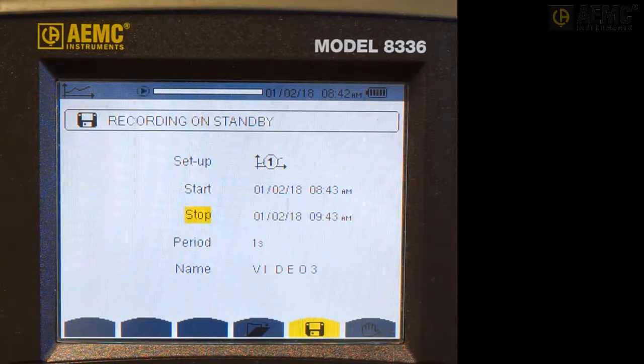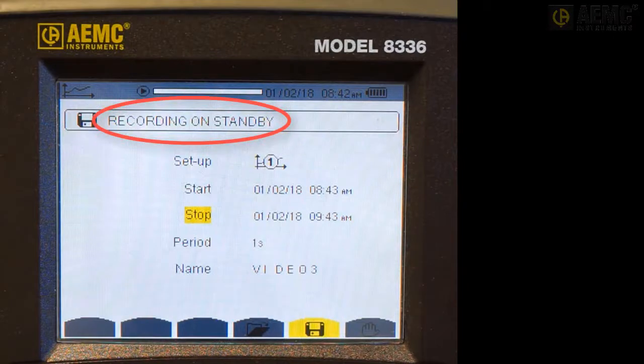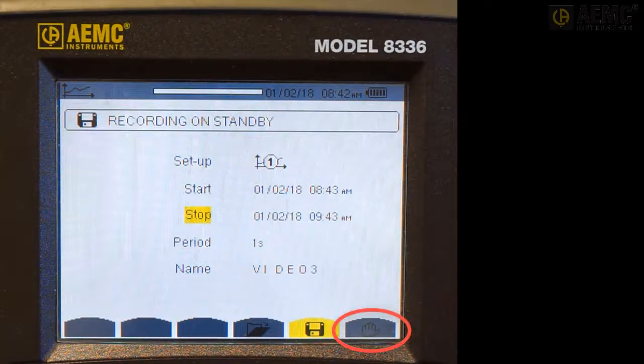Before a scheduled recording starts, the message Recording on Standby should appear at the top of the screen. This indicates all scheduled parameters have been accepted by the instrument and that there is sufficient memory for the recording. While the instrument is in Standby, the right-most Function button changes to a Hand icon. This enables you to stop an active or pending recording. In addition, the Play icon at the top of the screen blinks, indicating that the instrument is ready to record. This icon blinks throughout the active recording session.